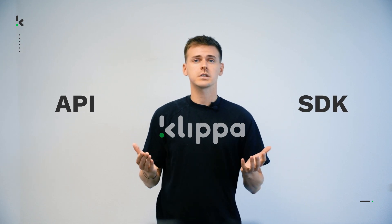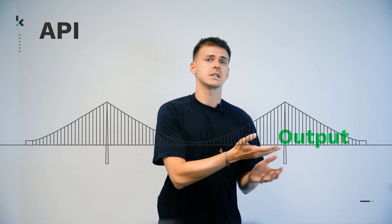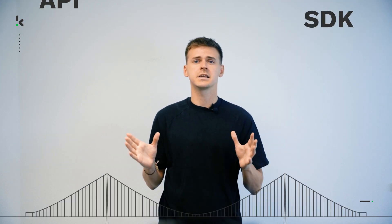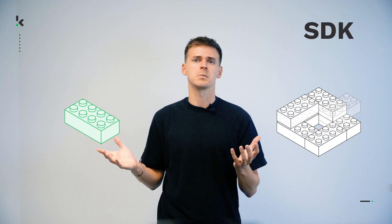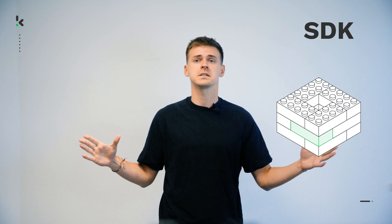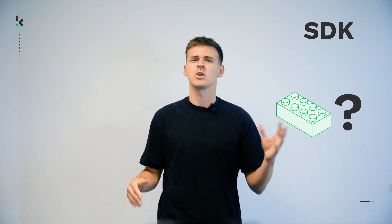In short, an API is a provided service functioning like a bridge. You send your input data one way and receive the processed output back. An SDK is more like a toolbox, a building block that becomes part of your application to enhance it and save you from creating complicated or very specific functionalities yourself.